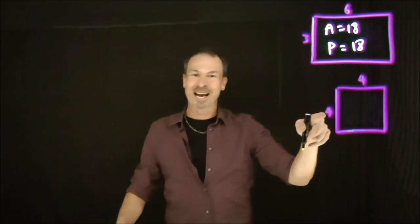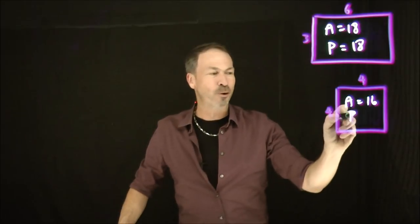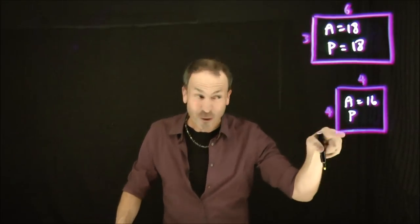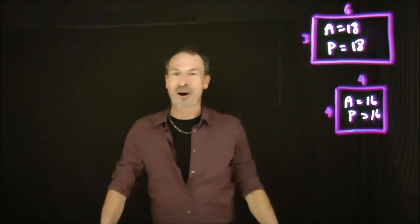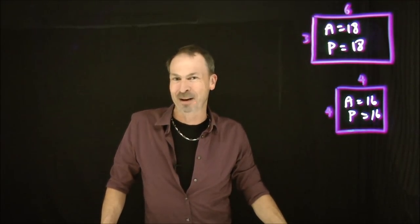And look at this square. Area would be 4 times 4, 16 units squared. And perimeter would be 4 units plus 4 units plus 4 units plus 4 units, 16 units long. The area and perimeter have the same numerical value again. Wow!